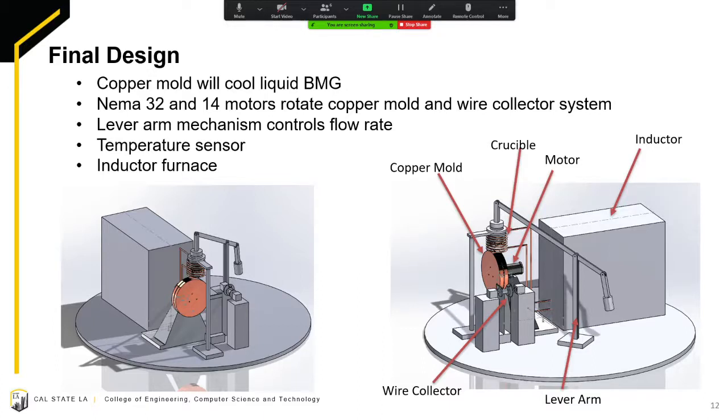An arm attached to the NEMA 14 motor will be rotating the wire collector system. As soon as the arm catches the wire, it will begin rotating driven by the NEMA 14 motor as the copper mold is rotating at a similar rate when driven by the NEMA 23 motor. A temperature sensor will be continually monitoring the temperature of the copper mold to ensure that we are achieving a necessary temperature gradient to ensure the cooling of the metallic glass wires to form the amorphous structure needed that defines metallic glass.